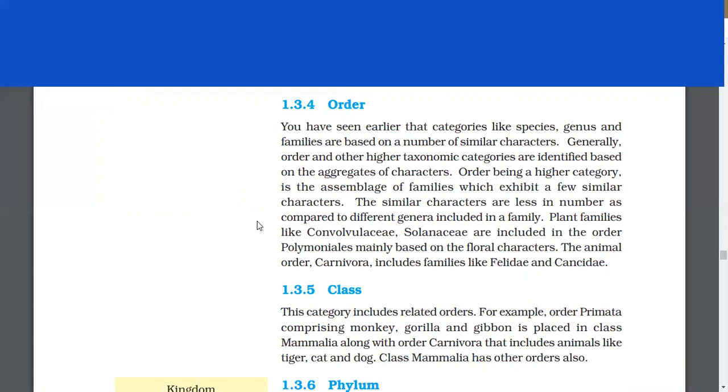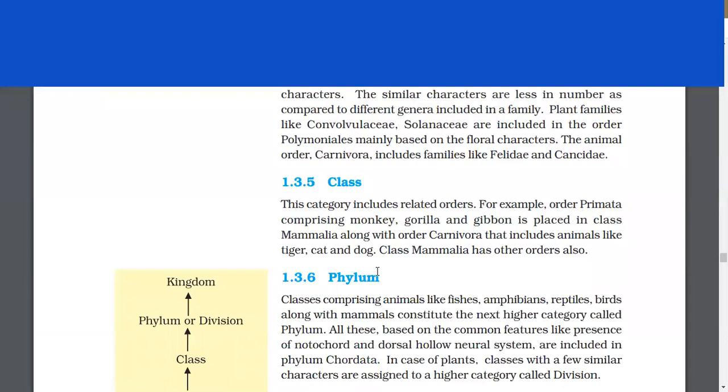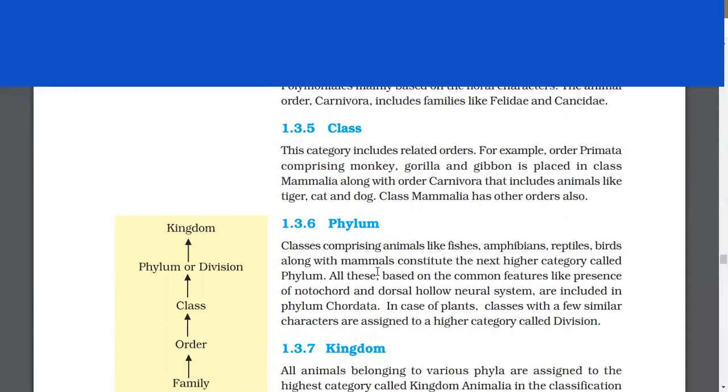Class. This category includes related orders. For example, order Primates comprising monkey, gorilla, and gibbon is placed in class Mammalia along with order Carnivora that includes animals like tiger, cat, and dog. Class Mammalia has other orders also.